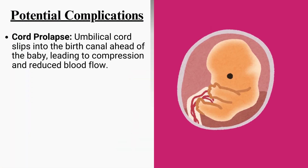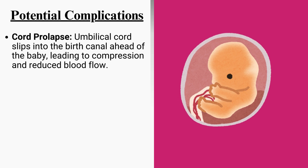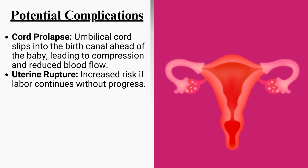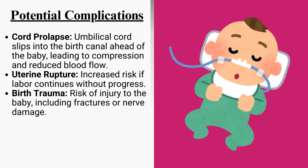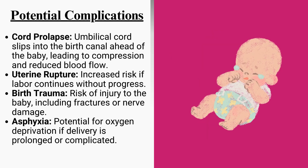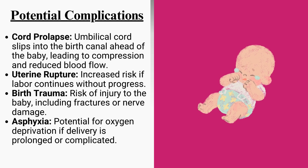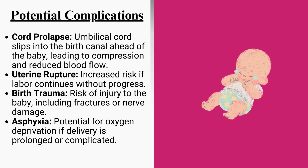Potential complications include: cord prolapse, where the umbilical cord slips into the birth canal ahead of the baby, leading to compression and reduced blood flow; uterine rupture, with increased risk if labor continues without progress; birth trauma, including risk of injury to the baby such as fractures or nerve damage; and asphyxia, with potential for oxygen deprivation if delivery is prolonged or complicated.